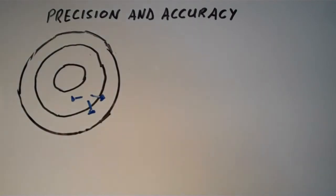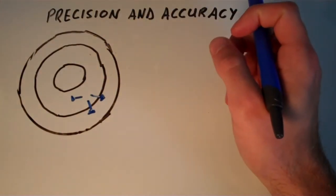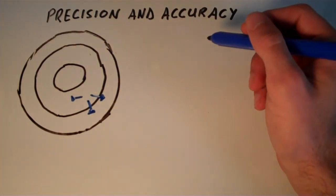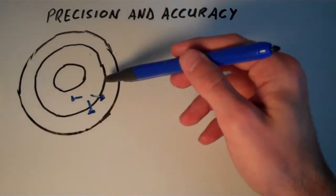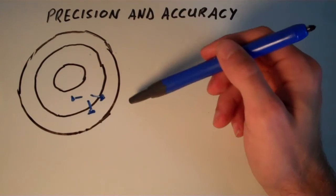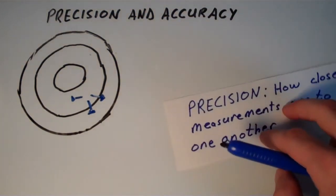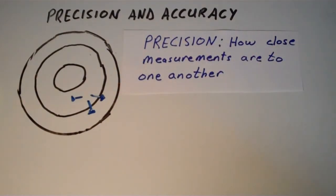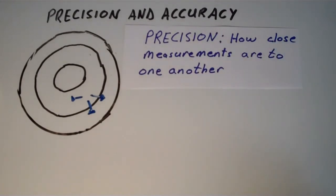Now, although these darts didn't land on the bullseye, these darts are pretty close to one another, and that has to show for something, right? So when we talk about how close the darts are to one another, we're talking about precision. In chemistry terms, precision refers to how close measurements are to one another. So we're talking about how reproducible the measurements are.